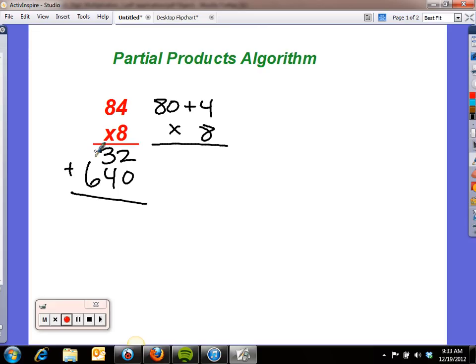And then this is part of my product, and this is part of my product, which is why we call it partial products. And so all I have to do is add these together. So I have them lined up correctly: 2 plus 0 is 2, 3 and 4 is 7, and then I bring down my 6. So my answer is 672. Let's do one more.